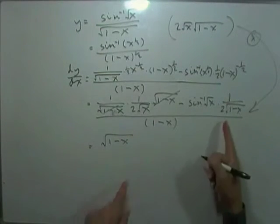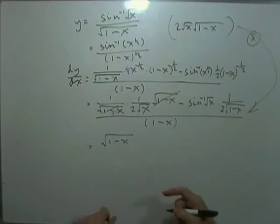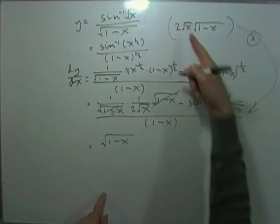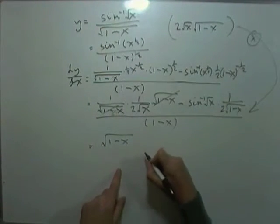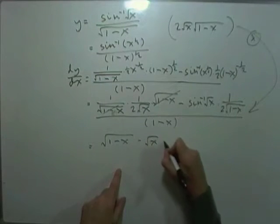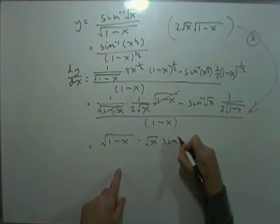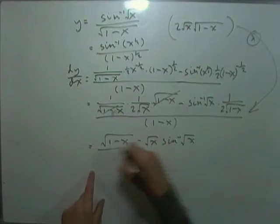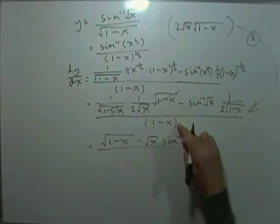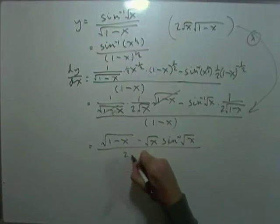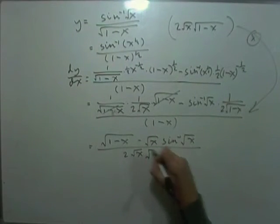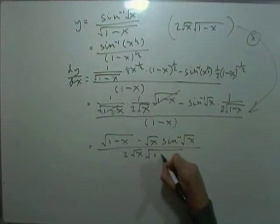And the second part, the 2 would cancel out. The root 1 minus x would cancel out. Just leave me with a root x to multiply the sine. So that's minus root x. Inverse sine, negative 1 of root x. All over. And then multiplying the bottom by all of that. 2 root x times the square root of 1 minus x.